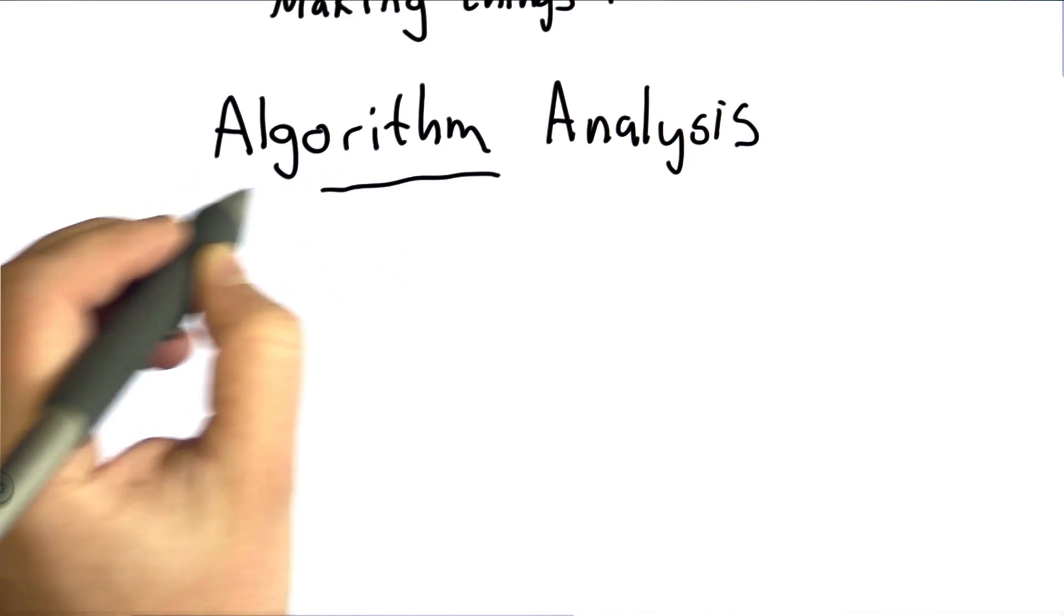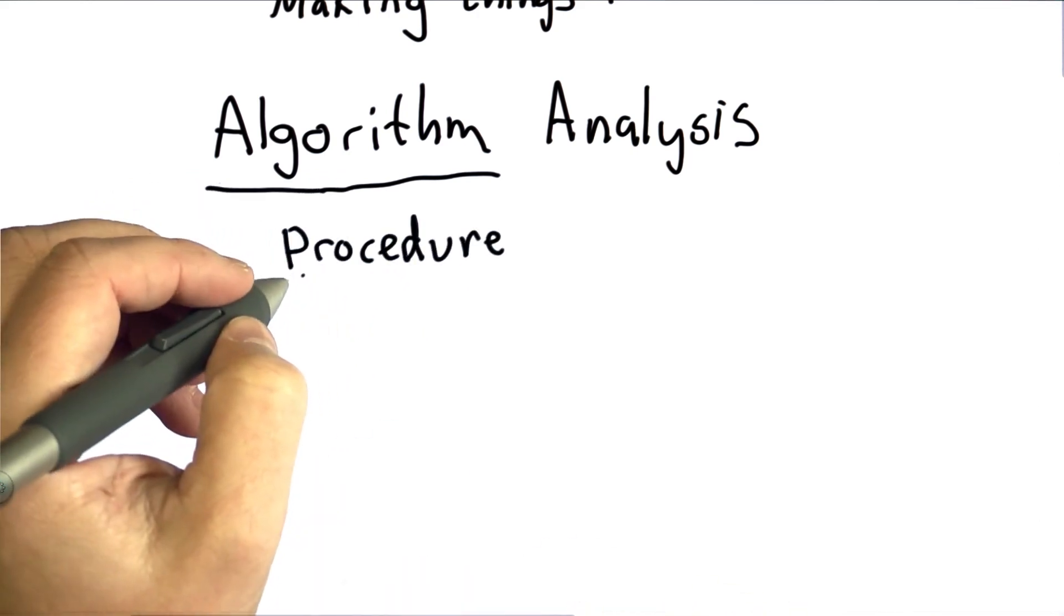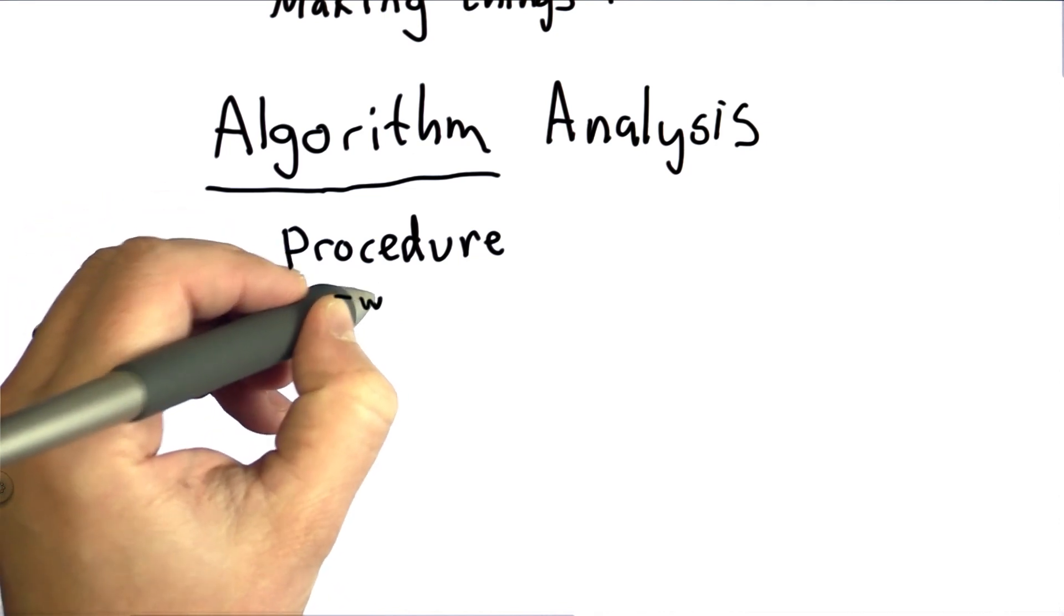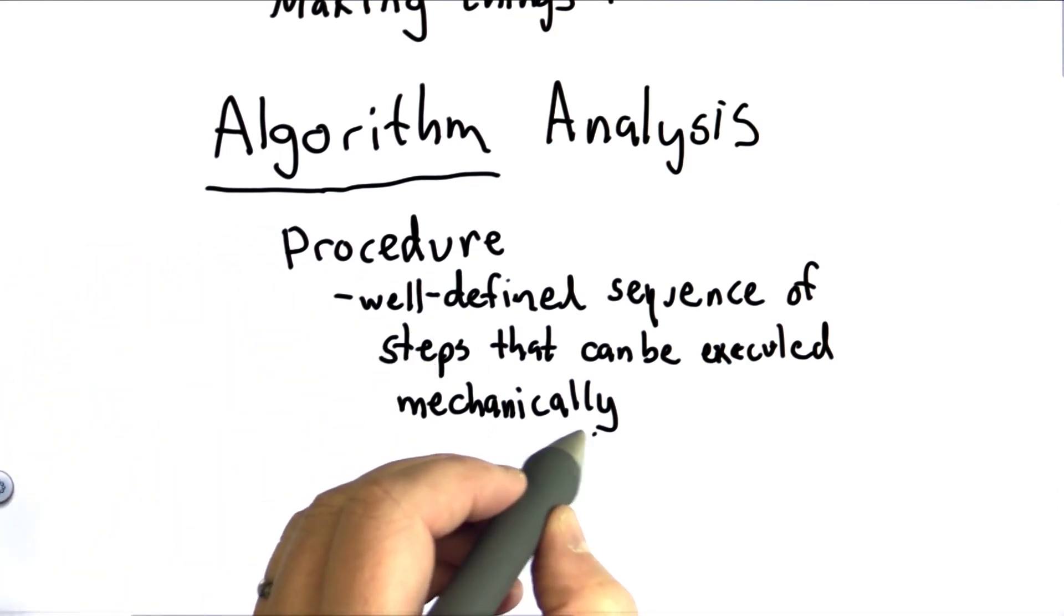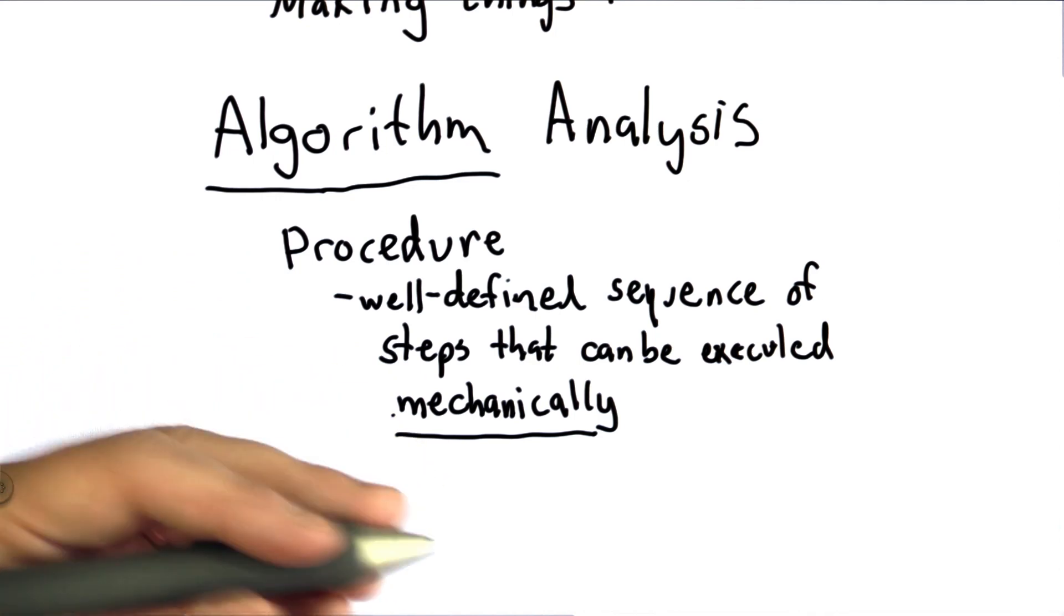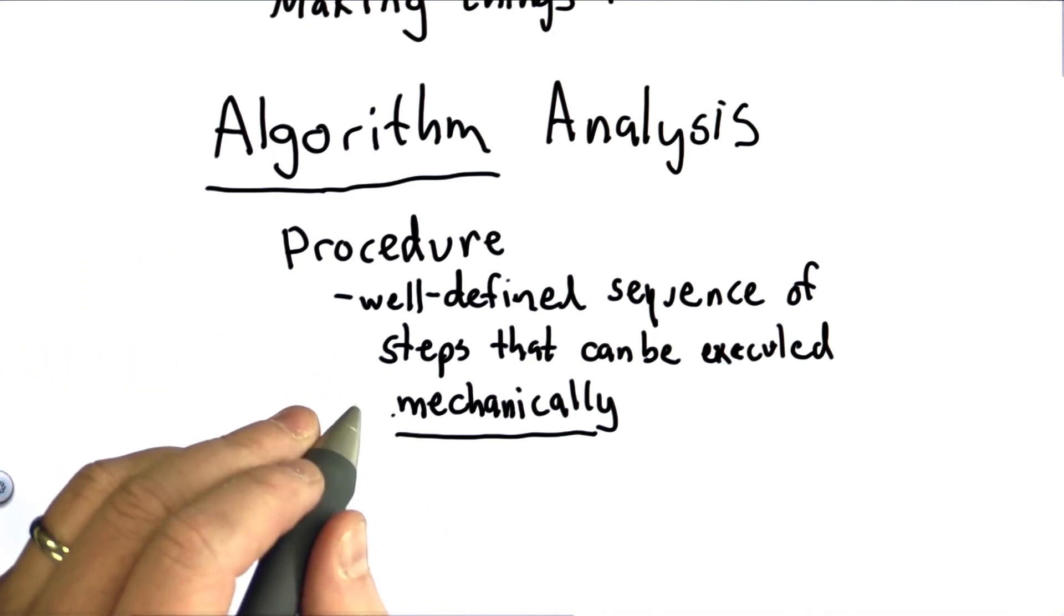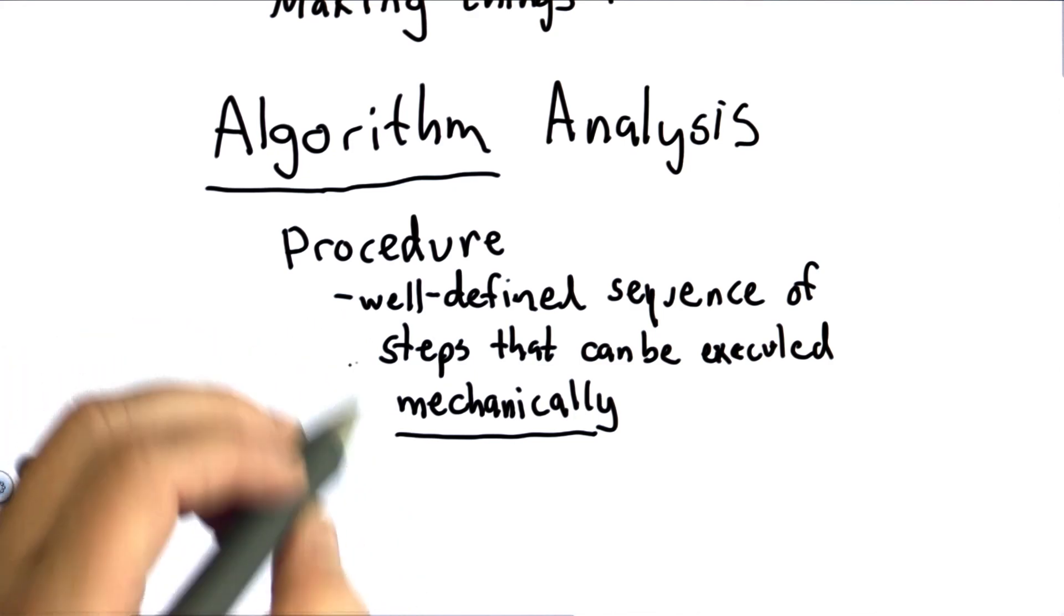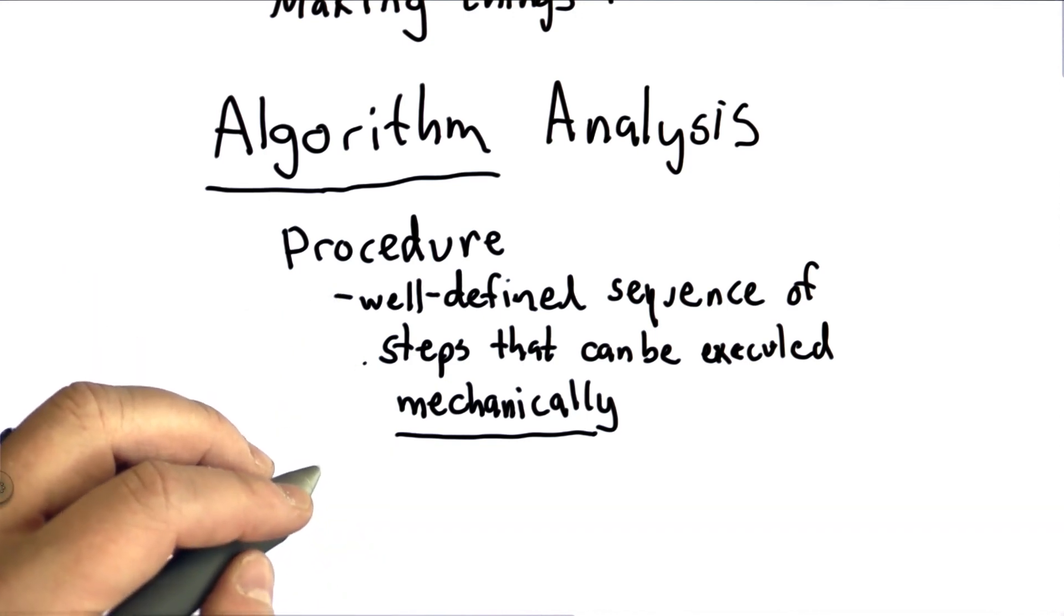I haven't yet explained what an algorithm is, but you've actually written many of them already. So an algorithm is a procedure that always finishes. A procedure is just a well-defined sequence of steps. It has to be defined precisely enough that it could be executed mechanically. So to be a procedure, it has to be something that can be executed without any thought. And we're mostly interested in procedures that can be executed by computers. But the important part of what makes it a procedure is that the steps are very precisely defined and don't require any thought to execute.